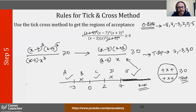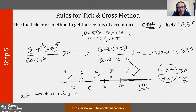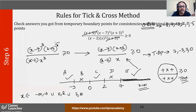So your answer — without brackets for now — is: x belongs to negative infinity to negative 3, union 0 to 2, union 7 to infinity. Make it a habit not to put your brackets yet. I will tell you why: you first need to check which bracket to put, and that is where step 6 comes in.